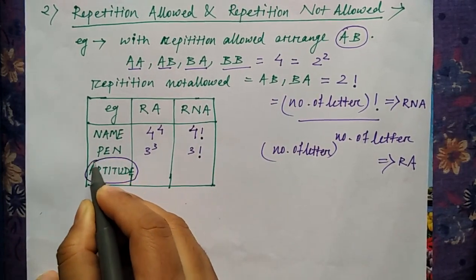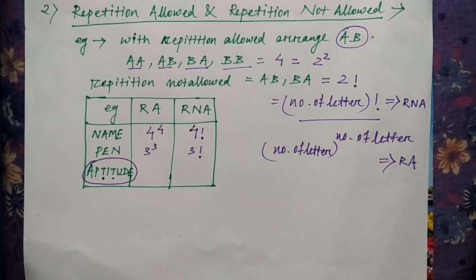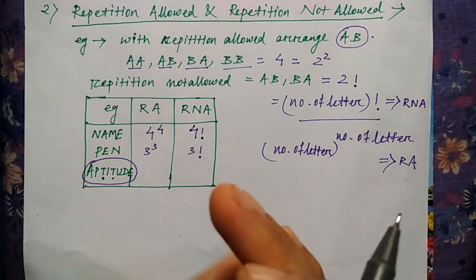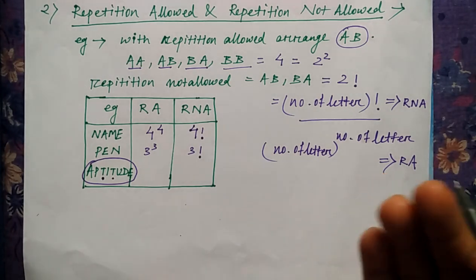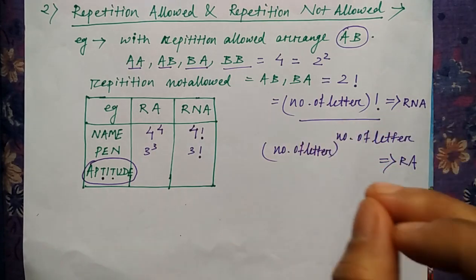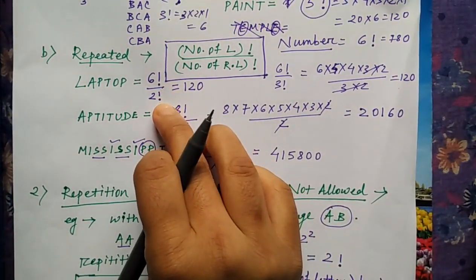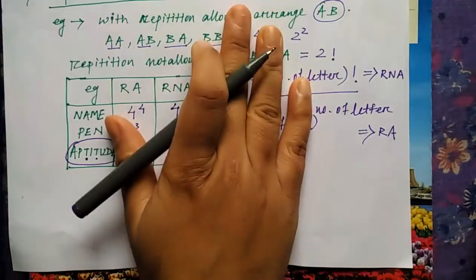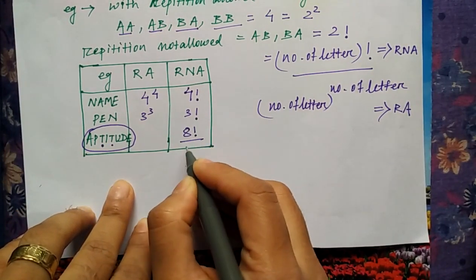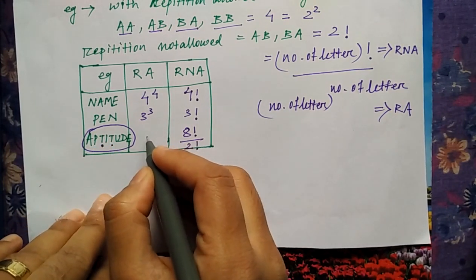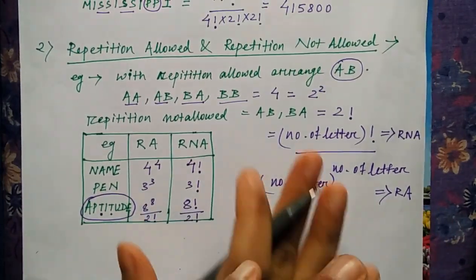Now the twist comes here in aptitude. If you can see, T is a letter which is repeated twice. First we take a word and try to find the possible arrangements with or without repetition. But if there are repeated alphabets present in the given word, the same way as in the previous formula, we divide by the factorial of the number of repeated alphabets. So it will be 8 factorial divided by 2 factorial for repetition not allowed, and 8 to the power 8 divided by 2 factorial for repetition allowed.